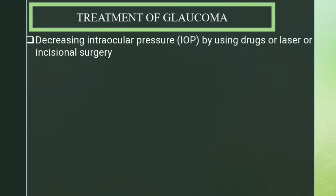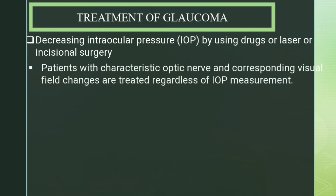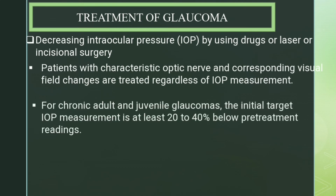In general, the main aim of glaucoma treatment is decreasing intraocular pressure by using drugs, laser, or incisional surgery. Patients with characteristic optic nerve changes and corresponding visual field changes are treated regardless of intraocular pressure measurement. For chronic adult and juvenile glaucoma, the initial target intraocular pressure is at least 20 to 40 percent below the pre-treatment readings.